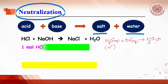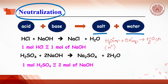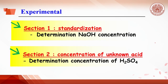This equation is balanced, so one mole of acid reacts with one mole of base. The second equation is sulfuric acid reacting with sodium hydroxide. By stoichiometric balance, one mole of sulfuric acid reacts with two moles of sodium hydroxide. With this relationship, students can determine the concentration of an unknown acid. Today, students will carry out two sections: first, standardization to calculate the exact concentration of sodium hydroxide.